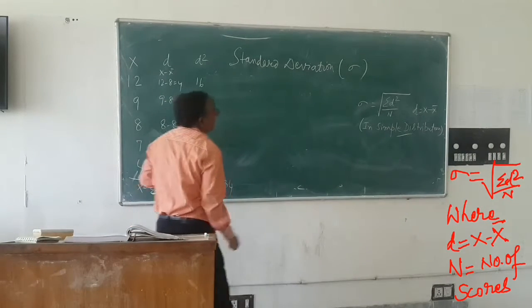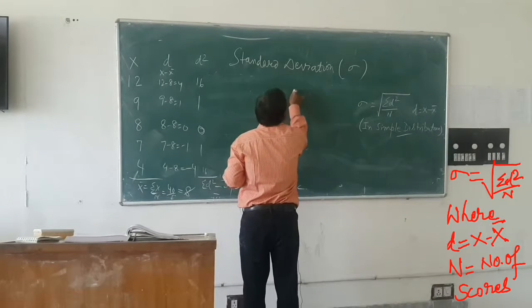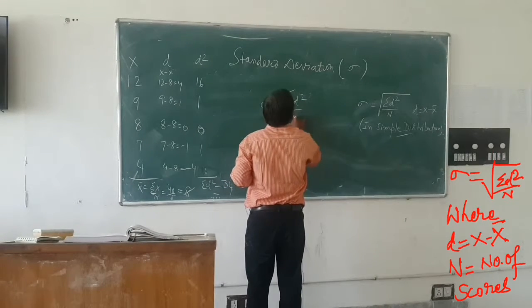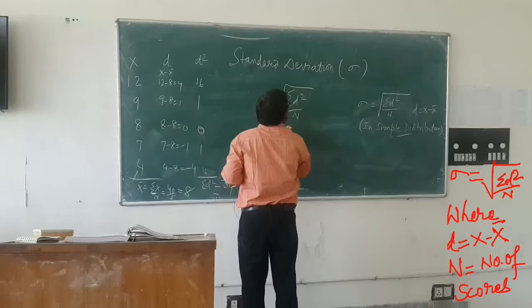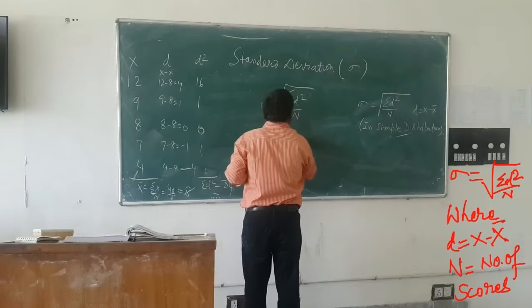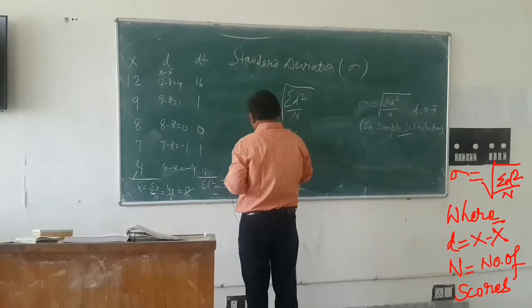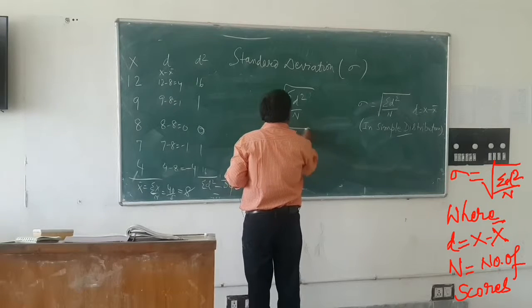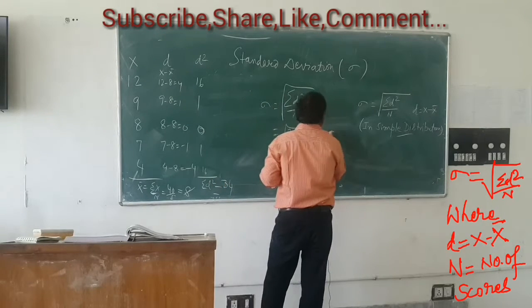So sigma is equal to summation d square by n whole root. Summation d square is 34 and n is 5. The square root of 6.8, what is this value? 6.8.